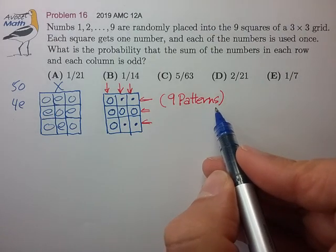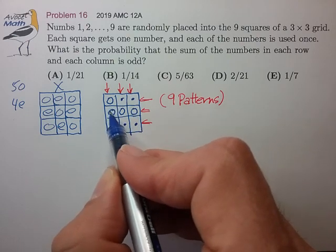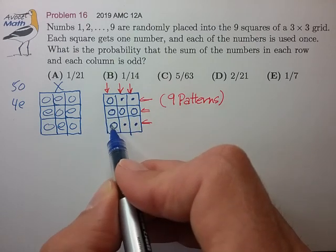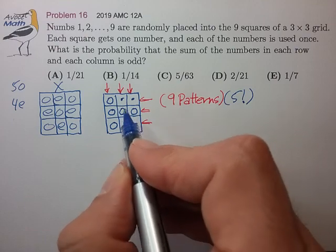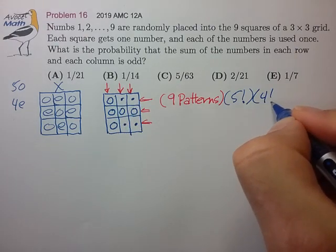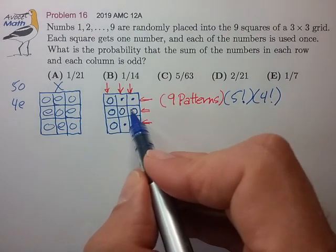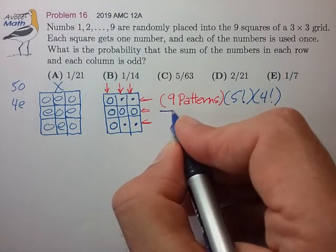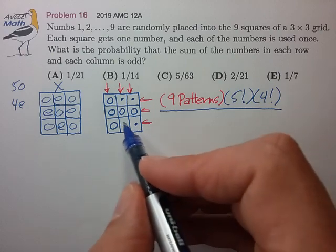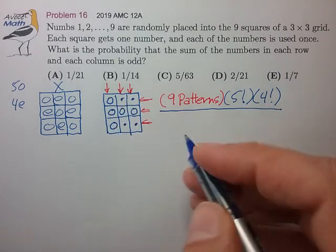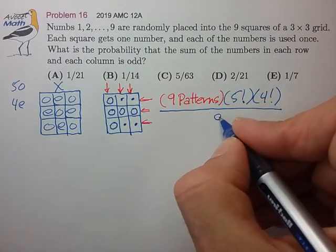For each pattern, we can place the five odd numbers in that particular pattern — that's just placing five distinguishable numbers into five labeled slots, a simple permutation. Likewise, we're placing the four even numbers into their labeled slots, again a simple permutation. So that's the total number of ways to place the numbers satisfying our condition. The total number of ways to place all nine numbers in any order — nine distinct numbers into nine labeled slots — is nine factorial.